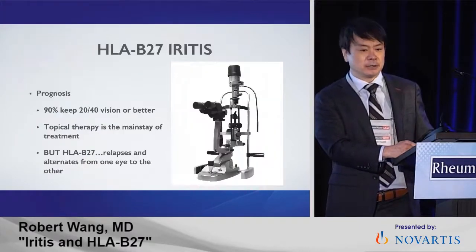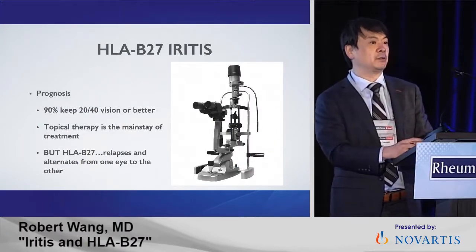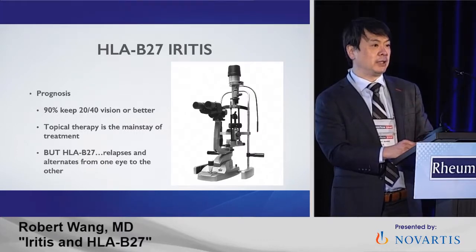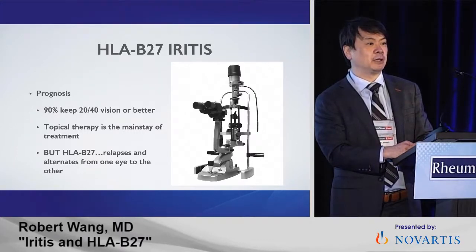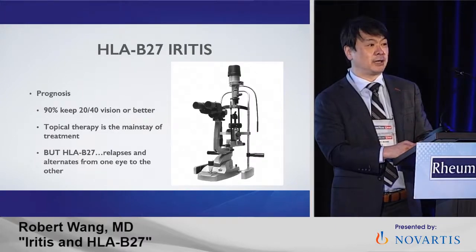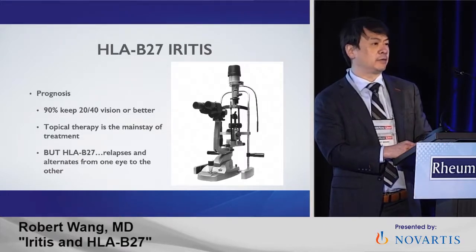The problem with those drugs is they can cause cataracts and glaucoma. The closer you move the drug into the eye, the higher the chance of developing cataracts and glaucoma. We have a three-year drug called Retisert that can be sewn in the eye — it costs $18,000, but it has a 100% cataract rate and either a 30% to 50% glaucoma rate.